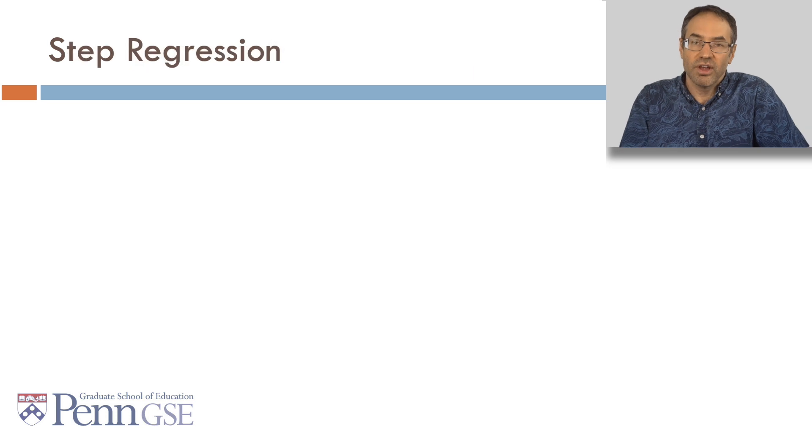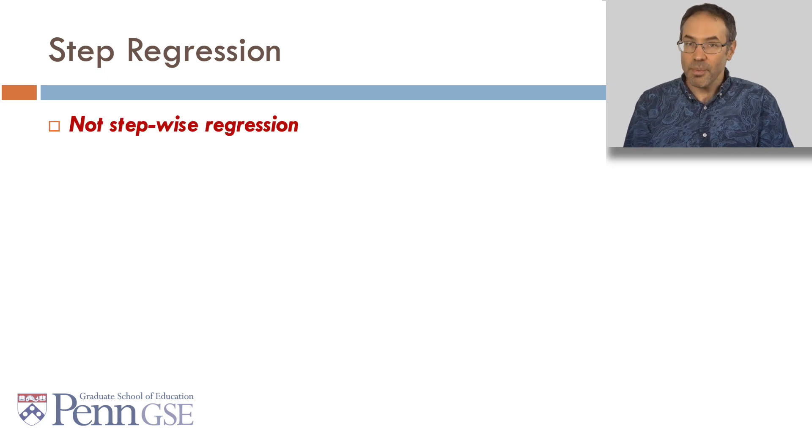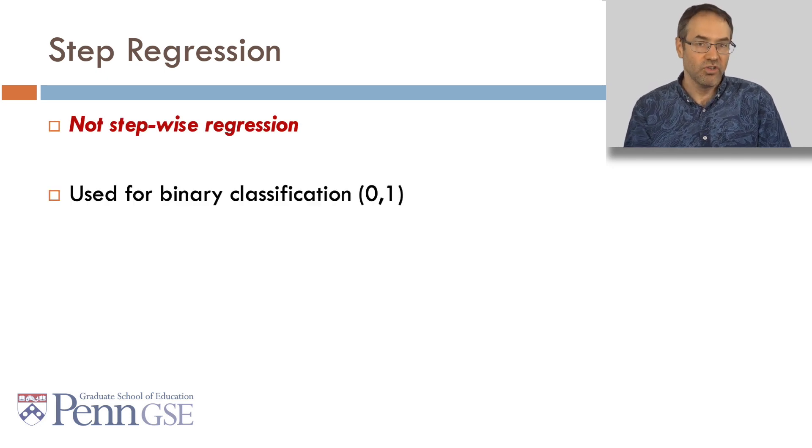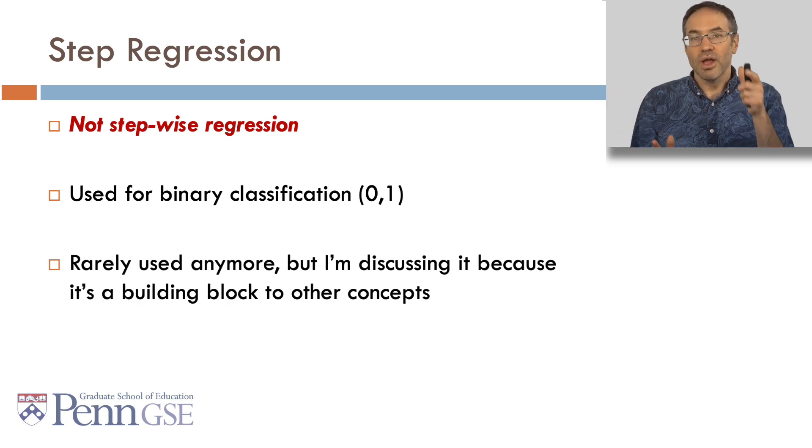The first classic algorithm I'd like to talk about is step regression, which, I have to point out, is not the same thing as stepwise regression. Step regression is used for binary classification, figuring out if something is a 0 or a 1. Step regression, let's be honest, it's rarely used anymore, but I'm discussing it because it's a building block to other concepts.